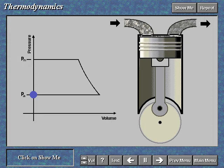Basic compressor operation corresponds with the ideal cycle pressure volume diagram. Click on Show Me to compare the two diagrams. When you are finished, click on the right arrow.